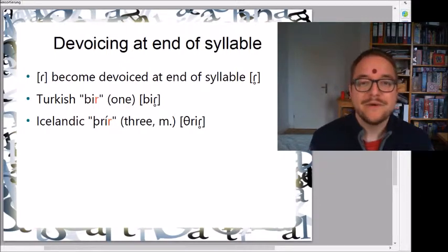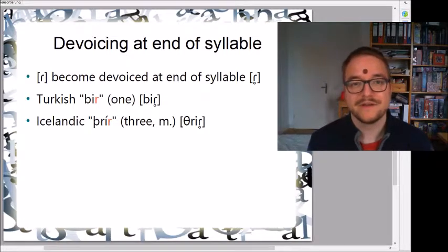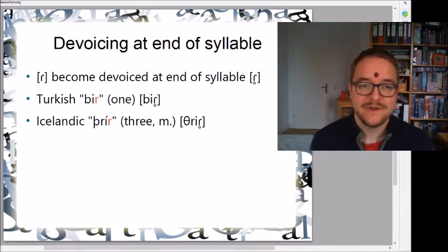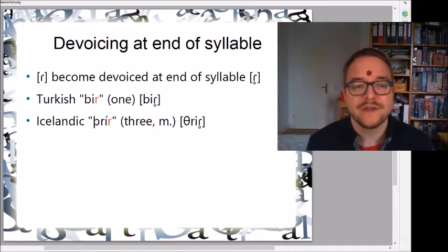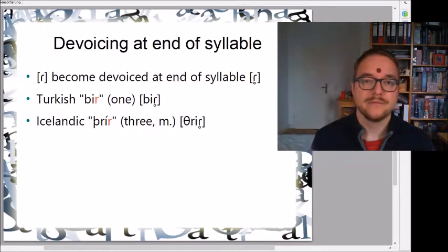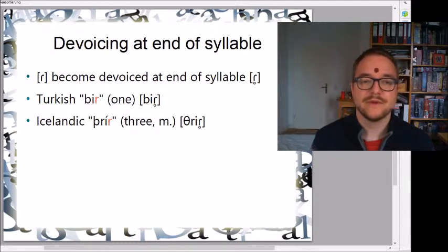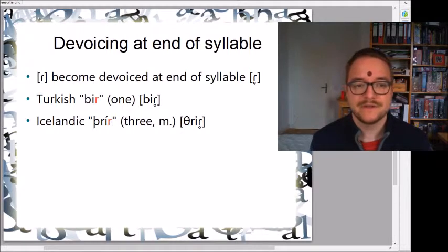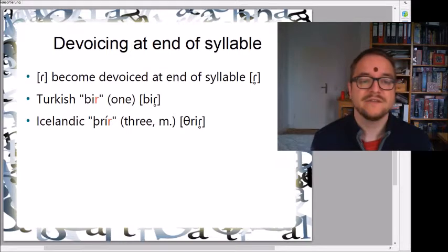R sounds, as varied as they are, can also be pronounced differently depending on where they appear in a word. Quite common is the de-voicing of a rotic at the end of a syllable, so the R becomes devoiced. You see this with the flap — for example in Turkish 'bir' meaning one, or in Icelandic 'þrír' meaning three.